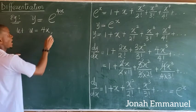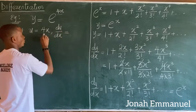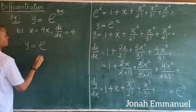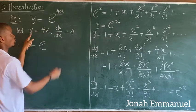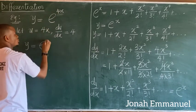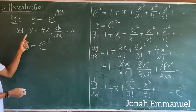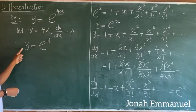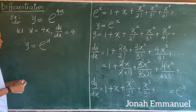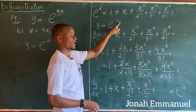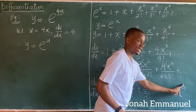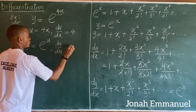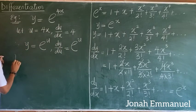Differentiating u with respect to x gives du/dx equal to 4. Since u = 4x, y becomes e^u. Just as differentiating e^x gives e^x, differentiating e^u with respect to u gives dy/du equal to e^u.